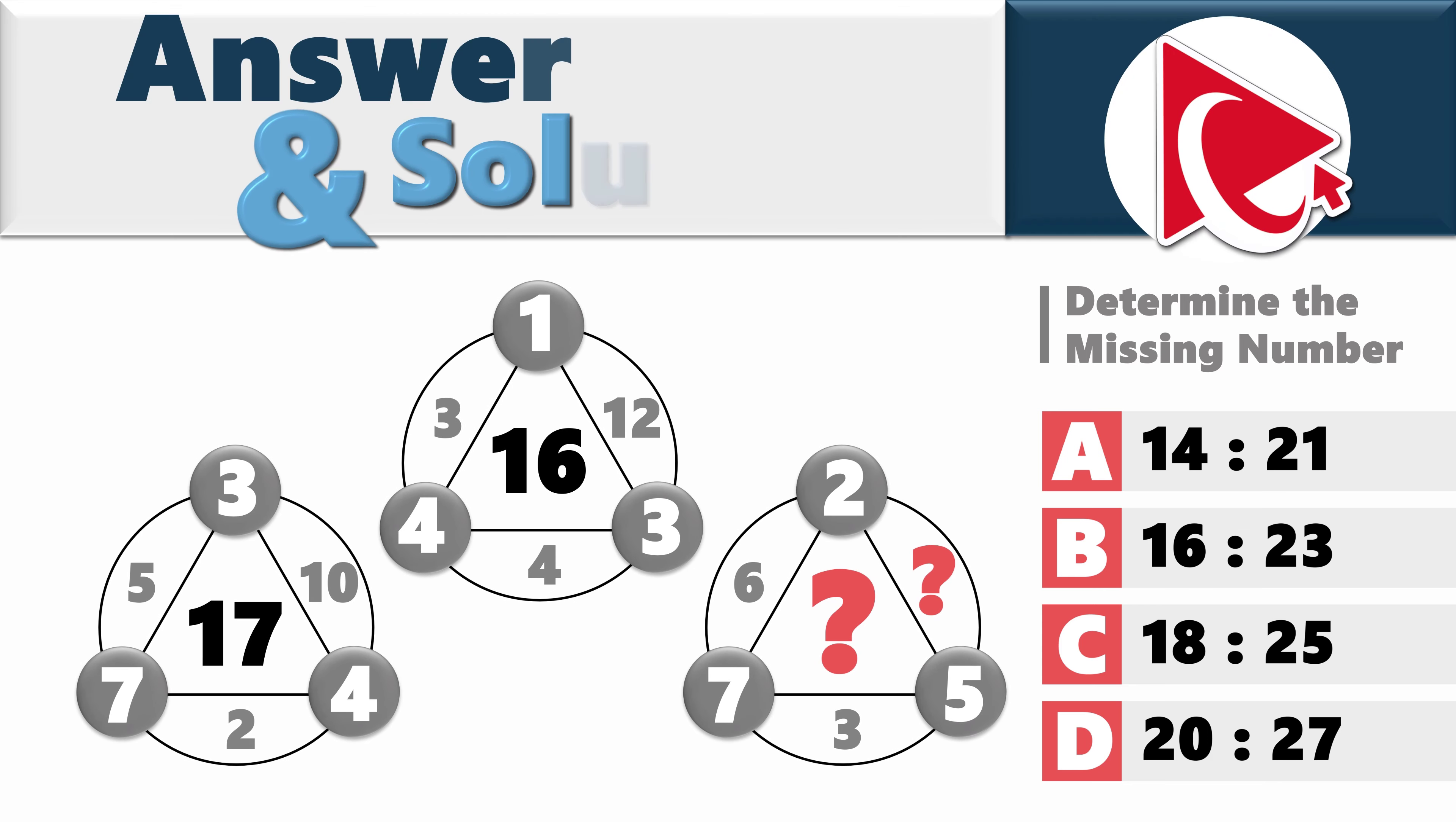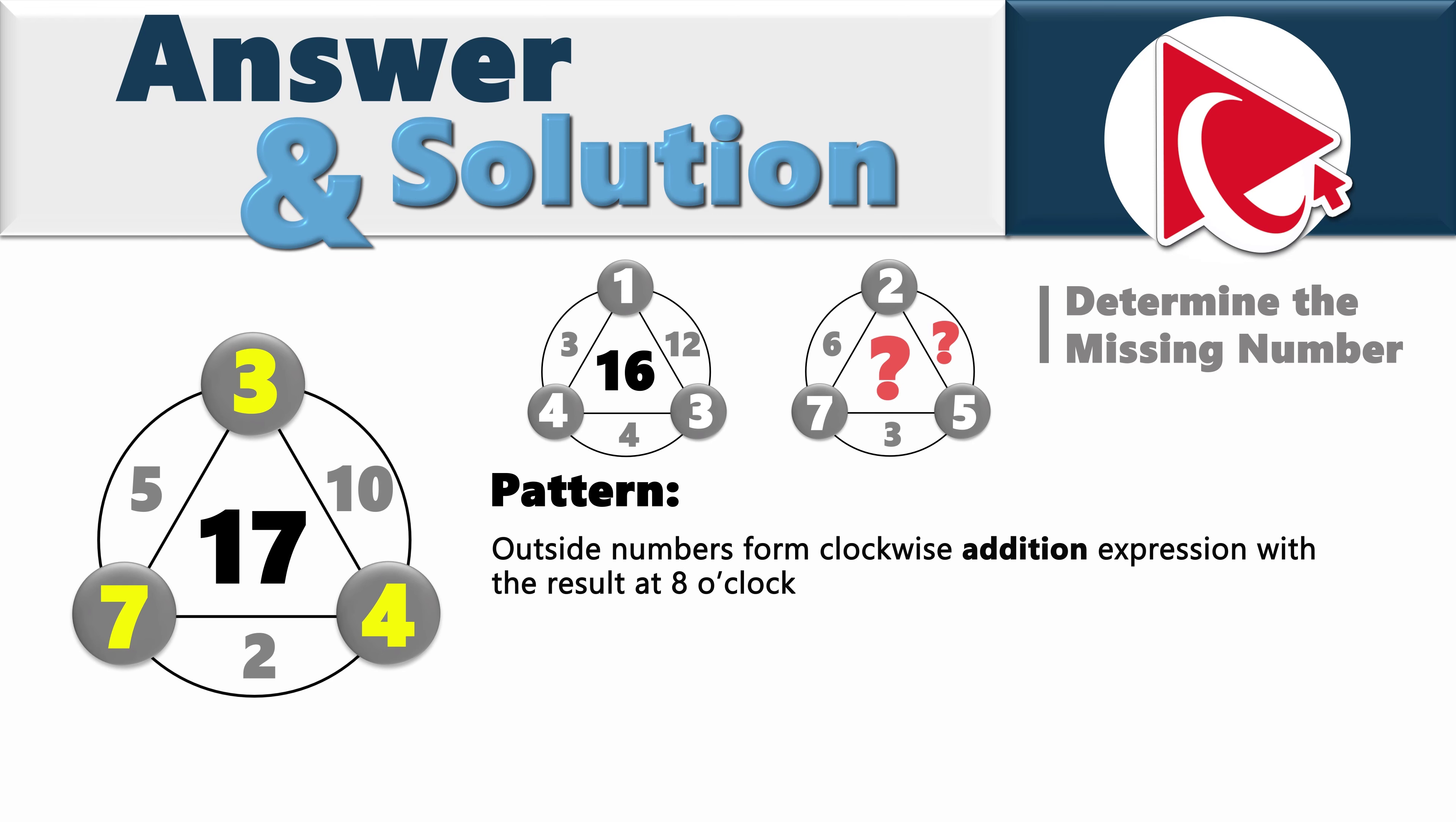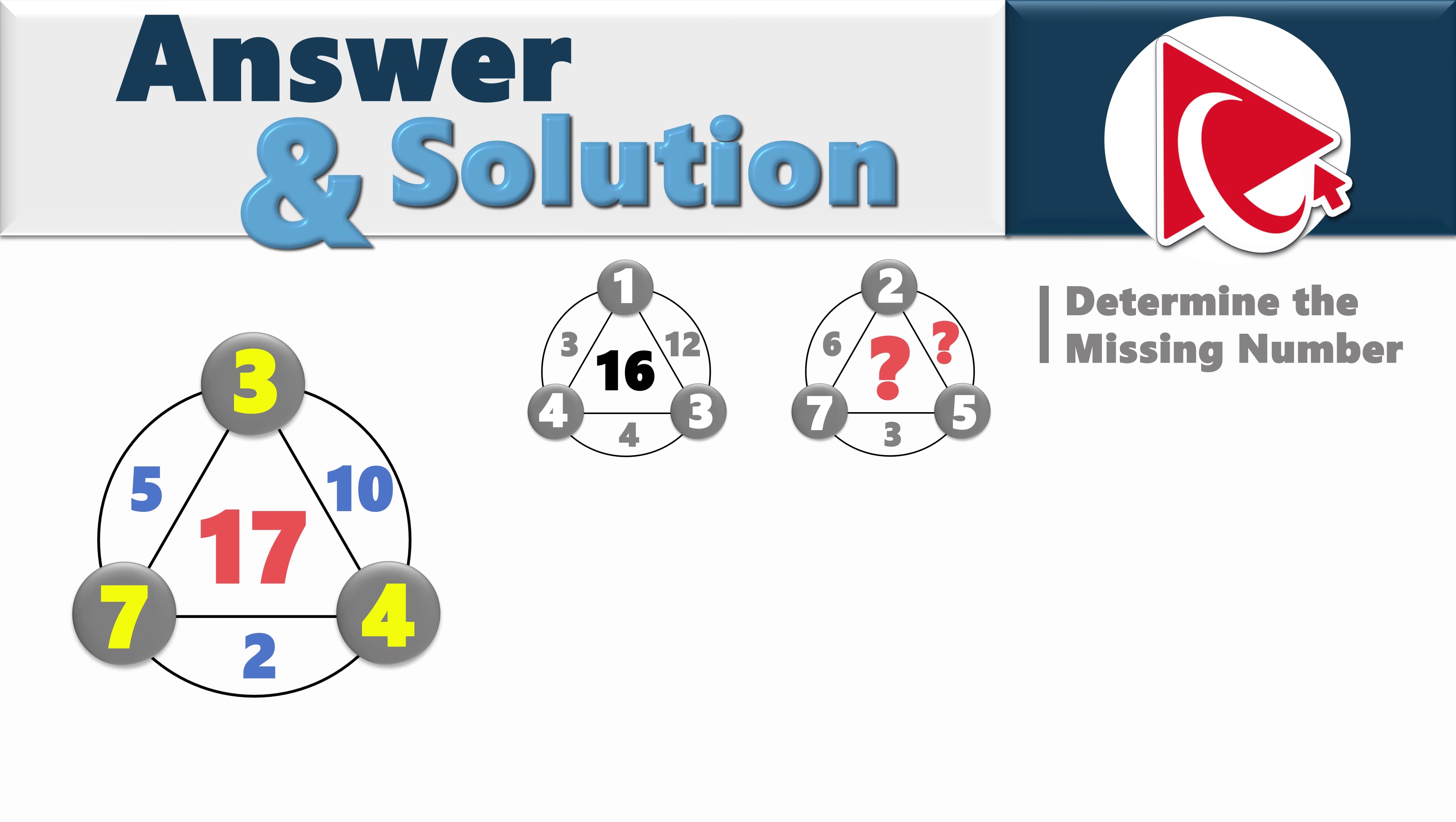If you look closely, you can easily recognize the pattern. In fact, outside numbers form clockwise addition expression with the result at 8 o'clock. And inside numbers form multiplication expression with the result at 2 o'clock. And middle number is the sum of results of both calculations.